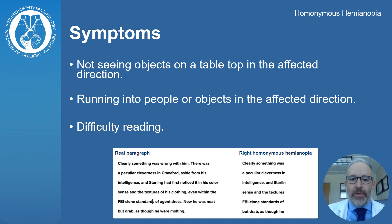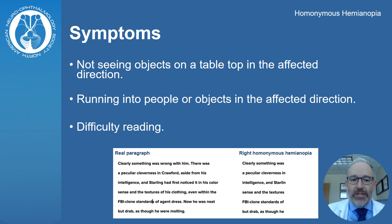Patients with homonymous hemianopia may have difficulty seeing objects in their environment. For example, affected individuals may only eat food on one half of their plate, or they may have trouble running into people or objects in the affected direction of their vision. Reading may also be a challenging task, and patients often report symptoms such as losing their place on the lines of text, as illustrated in the figure below.